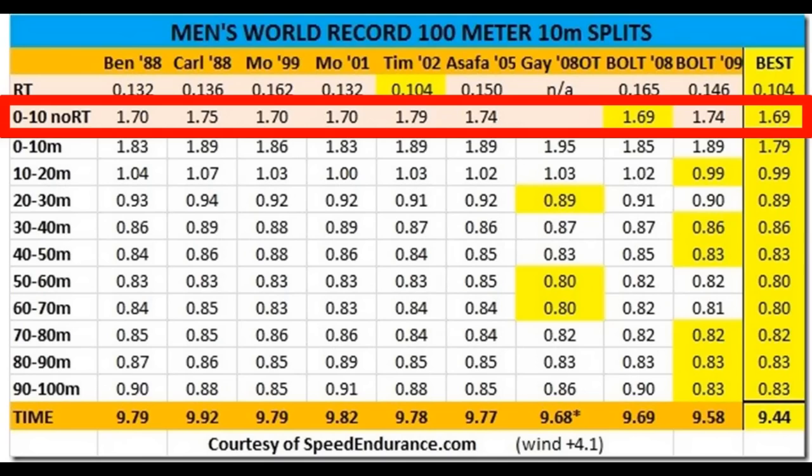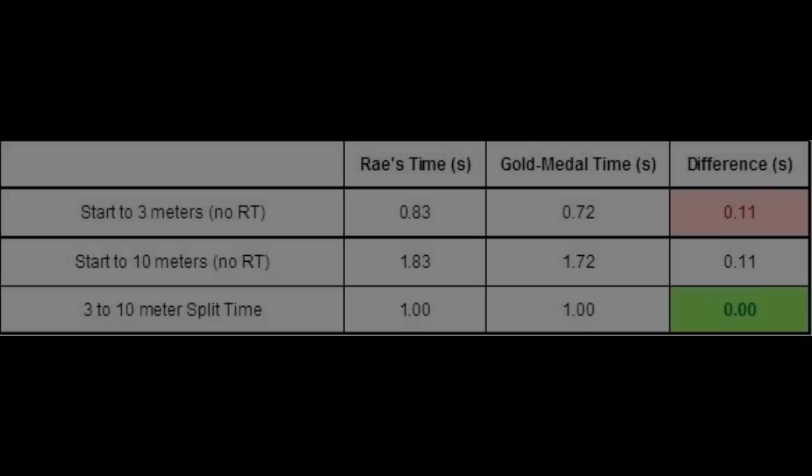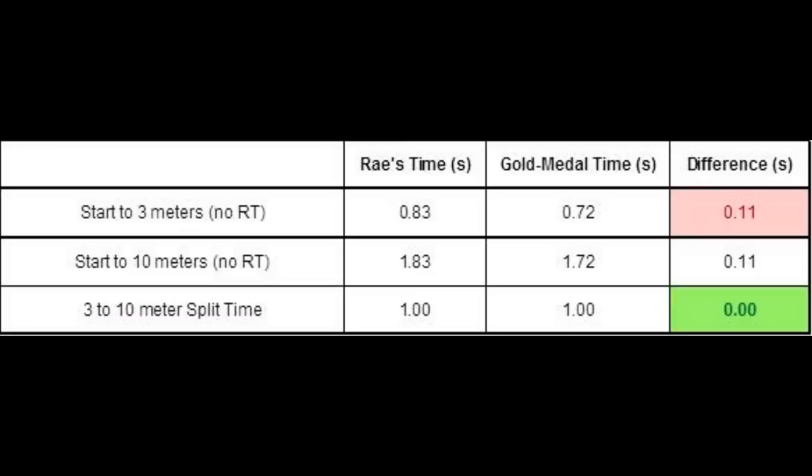Gold medal winners reached the 3 meter mark in 0.72 seconds and the 10 meter mark in approximately 1.72 seconds. Ray's 3 meter time was 0.83 seconds and his 10 meter time was 1.83 seconds. Therefore, Ray is actually as fast as the gold medal winner from 3 to 10 meters, but he can improve his time to 3 meters by a tenth of a second. This means we are looking for any small technique changes in the first couple of steps to help him make up this tenth of a second.